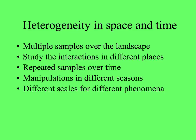In a study of this magnitude, they're trying to get at variation or heterogeneity in both space and time by conducting multiple samples over the landscape, looking at interactions between the plants, the vegetation, and animals in different places, and repeatedly sampling over time gives an indication of how things change. Fire in different seasons — manipulating in different seasons. Here in the Everglades, where we have fire-dependent pine rockland habitats, they've done similar experiments for many years and monitored vegetation change to determine the proper fire return interval and the right season of burning. Different biologists can study these experiments at different levels using different scales for different phenomena.